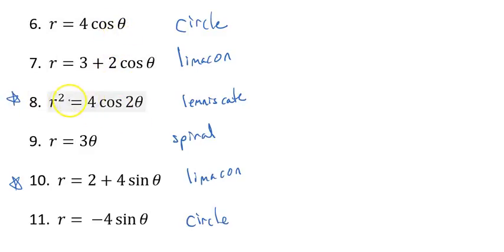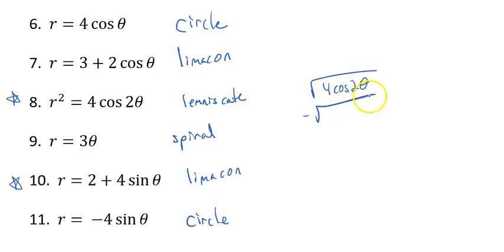Let's do number eight. Because it's r squared, you can't enter that directly in the calculator. You'll have to enter it as two separate equations: the square root of 4 cosine 2θ, and the negative square root of 4 cosine 2θ. Go back to y-equals and type in both. When you graph those, it has to struggle to connect the dots, but you can see it is a lemniscate — that little infinity-looking sign.